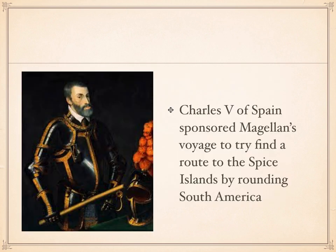Charles V was the grandson of Isabel and Ferdinand, who we talked about before. Magellan promised Charles that he would find a route to the Spice Islands in the Indian Ocean Trade Network and prove that they were in Spain's half of the world.